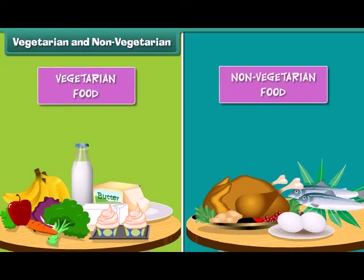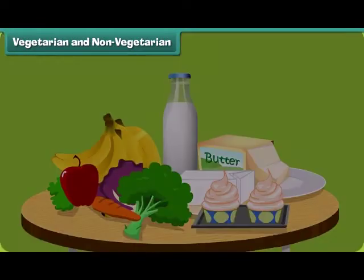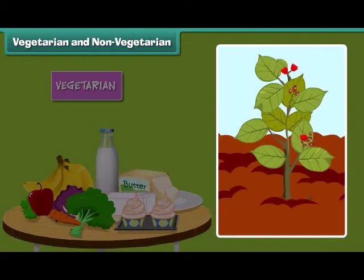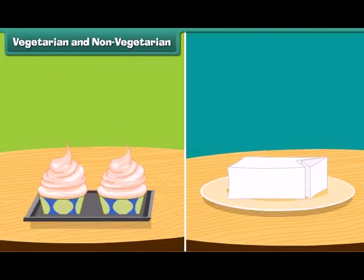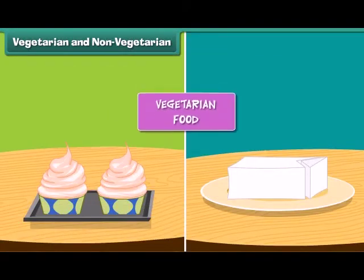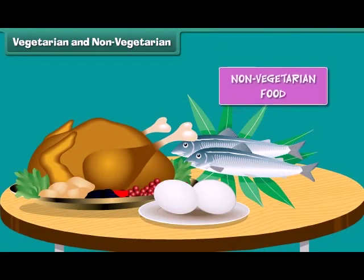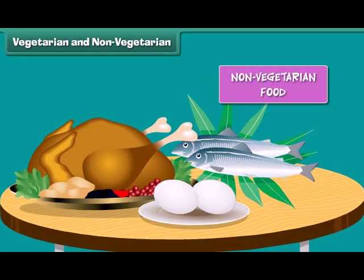There are two types of food: vegetarian and non-vegetarian. Fruits, vegetables, milk, and all milk products are vegetarian. Generally we get vegetarian food from plants — your favorite cheese and ice cream are vegetarian foods. Eggs, chicken, meat, and fish are non-vegetarian food. We get non-vegetarian food from animals.